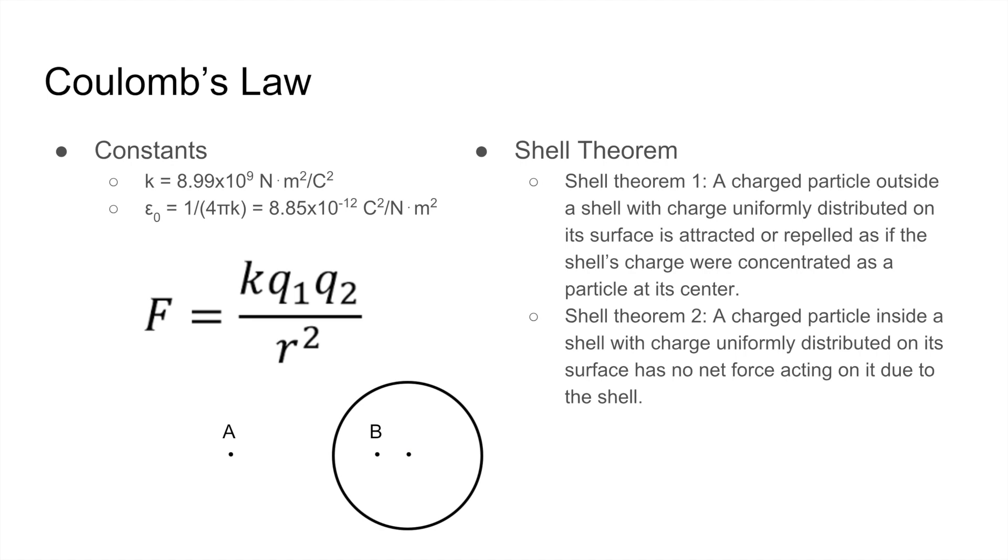And the other constant that you need to know is epsilon zero, which is given by 1 over 4 pi k or 8.85 times 10 to the negative 12 coulomb's squared over newtons over meters squared. And epsilon zero will be used a lot in later chapters.